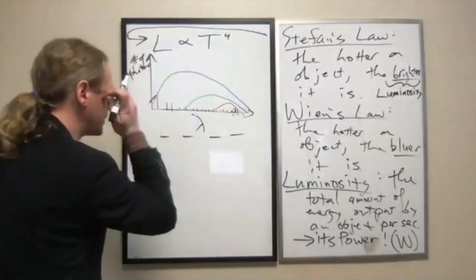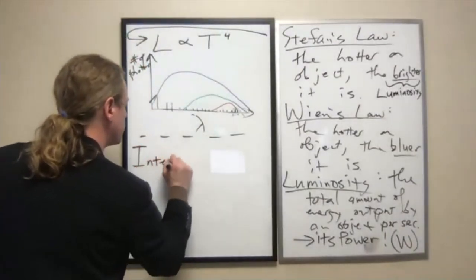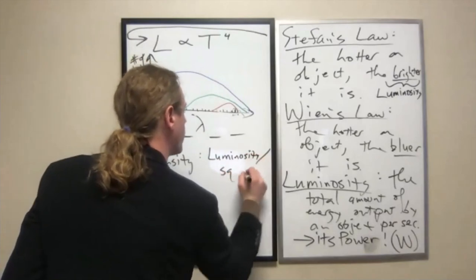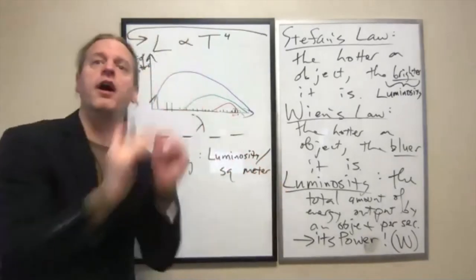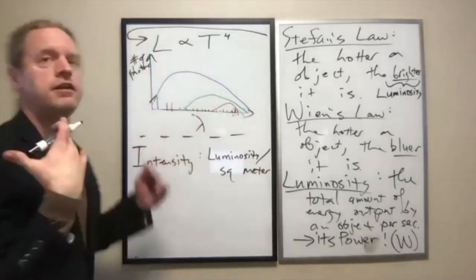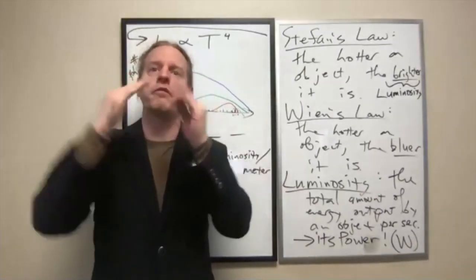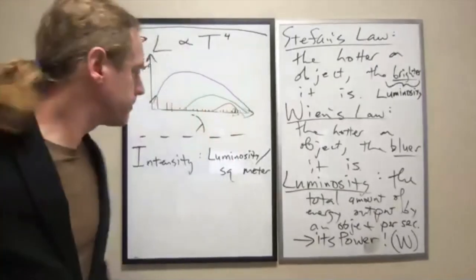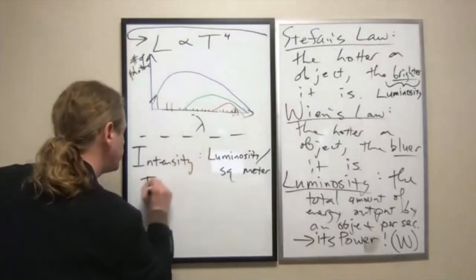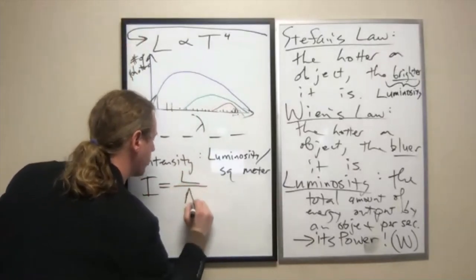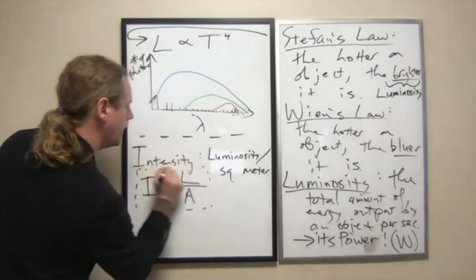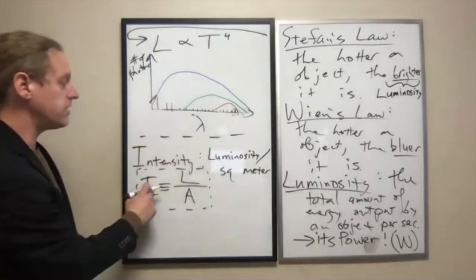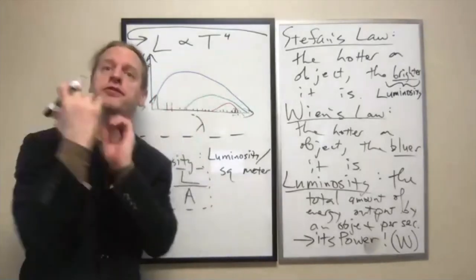So specifically Stefan's law says that the intensity, which we define by the way as the luminosity per square meter or per unit area of the surface, for a star, for example. So the intensity of light that something gives off. If you focus on a single square foot, square inch, square meter of an object or whatever it is, if you measure how much light that square foot gives off, that's what we call the intensity. So to be clear, the intensity equals the luminosity divided by the area. And these typically are the letters that we use in physics. So again, this is just the definition. Intensity is the luminosity of an object. How much power is given up per square area of its surface?